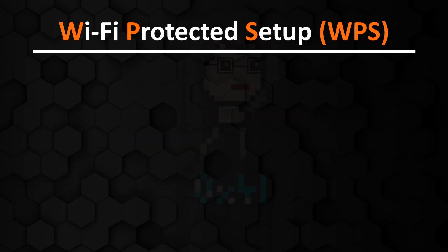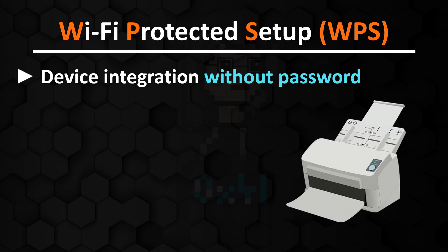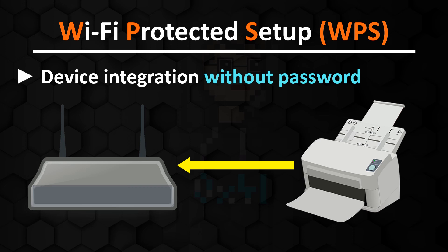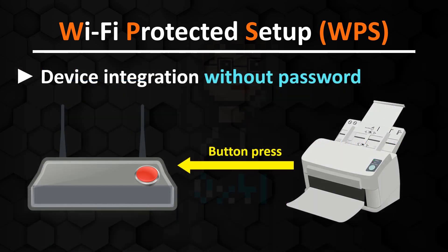Wi-Fi Protected Setup, WPS for short, allows devices such as printers to be integrated into the network without a password — at the push of a button. With the WPS push-button method, you simply press a button on the WLAN router or activate this authentication mechanism in the FRITZ!Box under the WPS quick connection tab. If you want to connect a printer, you also press a button on the printer within the time window in which the WLAN router is in login mode, which integrates the device into the network.